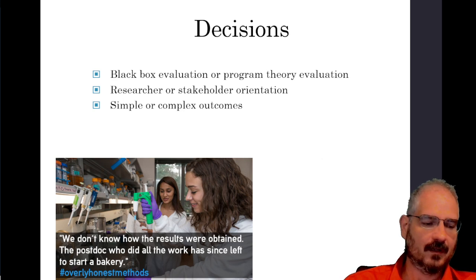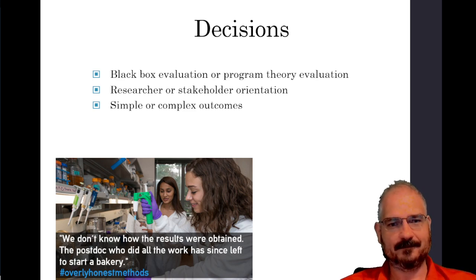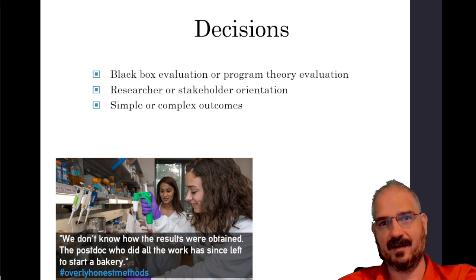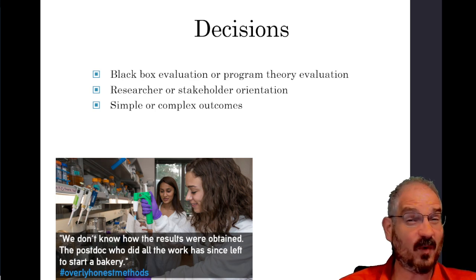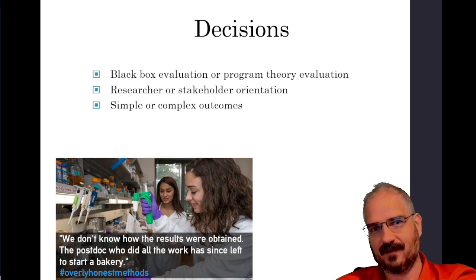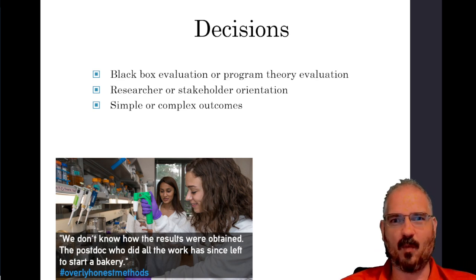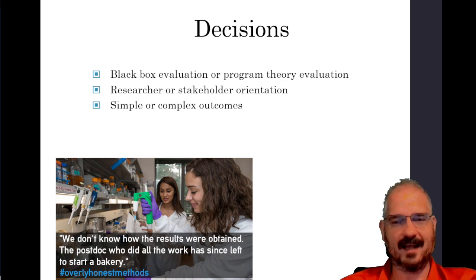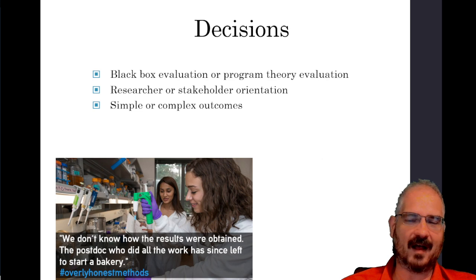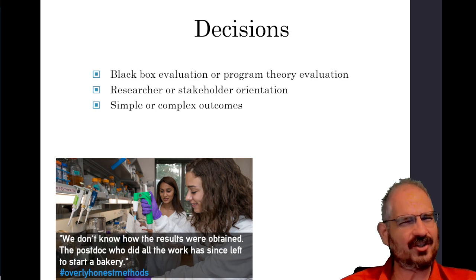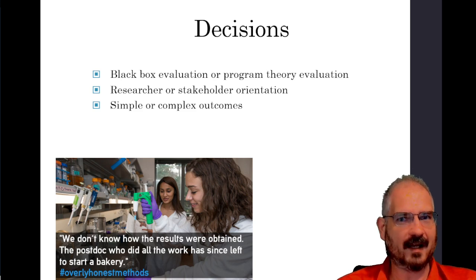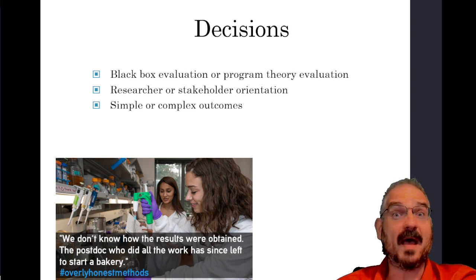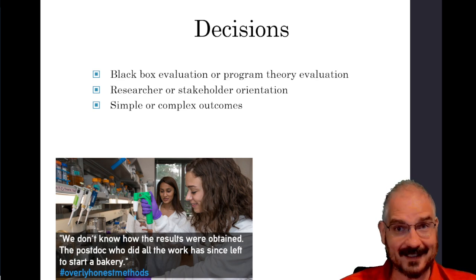We need to decide early on whether this will be a black box evaluation or a program theory evaluation. This is all about whether you care how something works or only whether it works. With a black box evaluation we don't care how or why something might work — we just want to know if it does. We're going to implement some change and see if it has an effect on our outcome. A program theory evaluation goes further and asks why — why did changing this process have this effect, and could we make the effect even larger?